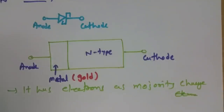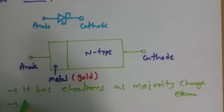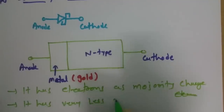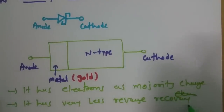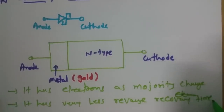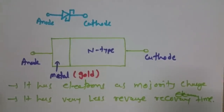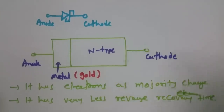Now, another important characteristic associated with the Schottky Barrier Diode is that it has very less reverse recovery time. Because of this very less reverse recovery time, we can use it in fast switching devices, like in microwave applications.